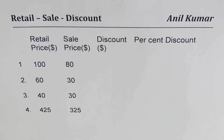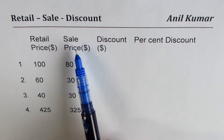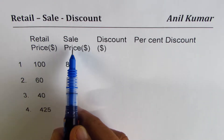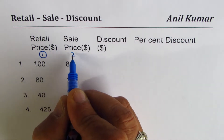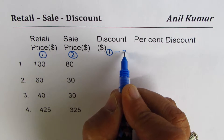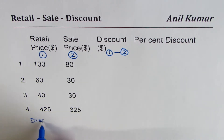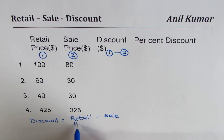Retail price is the normal price at which an item will be sold. Sale price is the actual price at which it is sold after a discount. To figure out the discount, we take the difference of retail price and sale price. If retail price is column 1 and sale price is column 2, then discount equals column 1 value minus column 2 value — the difference of retail and sale prices.